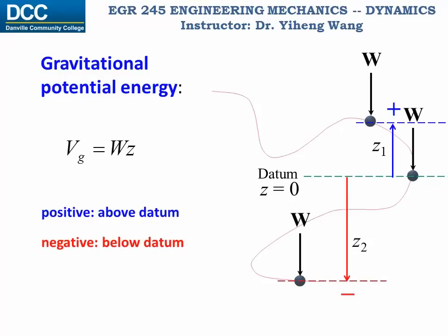As you will quickly notice, the value of this potential energy will change if you change your datum. That is correct. But as I said, the absolute value of the potential energy is not of interest. What's more important is the difference of the potential energy due to the change of the particle's location. Through a quick analysis you will find that no matter how you choose the datum, the difference in potential energy will stay the same for a given state change of the particle.